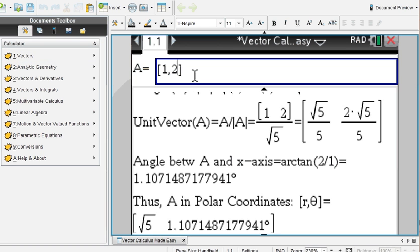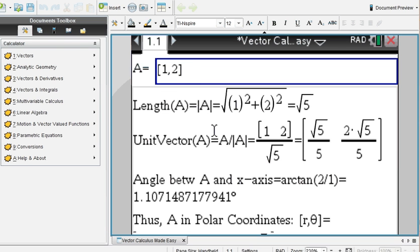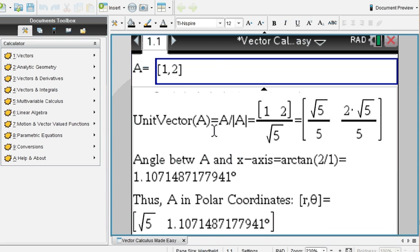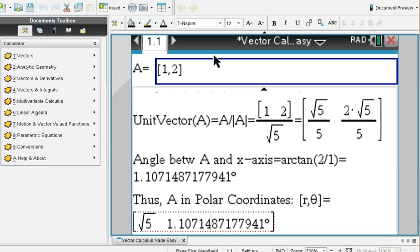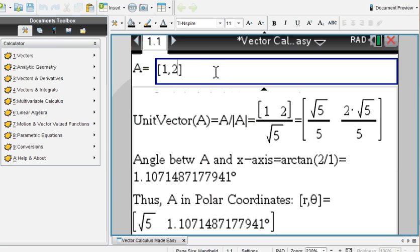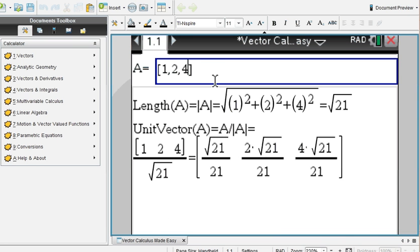You enter any vector. You're given the unit vector. The points in the same direction as a given vector. You see here the angle it makes with the x axis. Converted to polar coordinates. And it could be a two or three dimensional vector. Find the length and the unit vector.